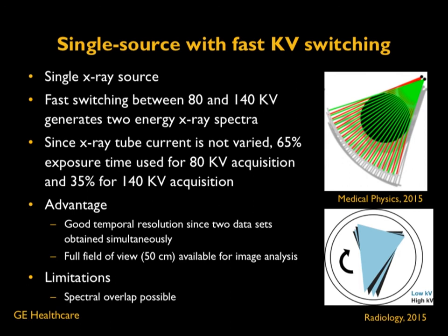Since two different tube voltages are used, the system automatically slightly varies the exposure time between the two energy beams. Since x-ray tube current is not varied, 65 percent of the time the system uses 80 kV acquisition and 35 percent of the time it uses 140 kV. At each instant, the tube voltage is switched between 80 and 140 kV, generating two different spectra. This single x-ray source with fast kV switching achieves the dual-energy principle.